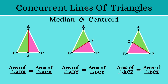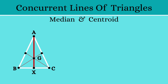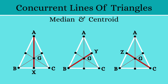Which means the two divided triangles are of equal area. These three medians are concurrent, which means they intersect at a single point. Let's name it G. This point is called the centroid of the triangle. One more interesting point to note is that the centroid divides each median in the ratio 2 is to 1.